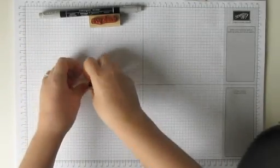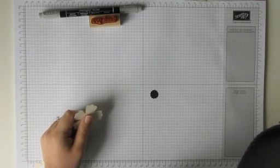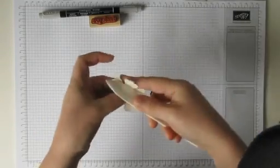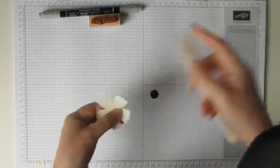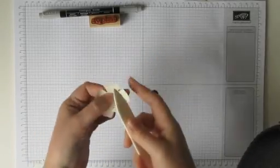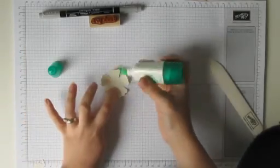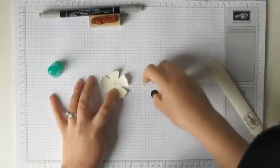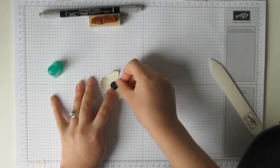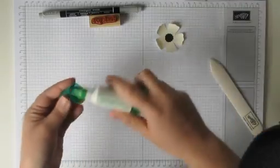What you do is you take the bone folder which I can't find. There it is. And just curve these edges. Oops sorry. Curve these petals. So that makes it a bit 3D. A bit of definition. A little blob of Tombow glue in the centre. And then place the black small flower there. Okay.